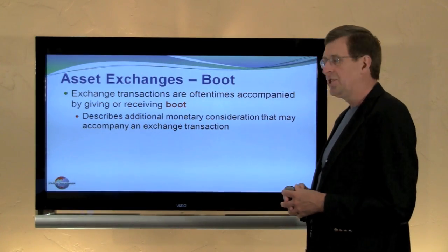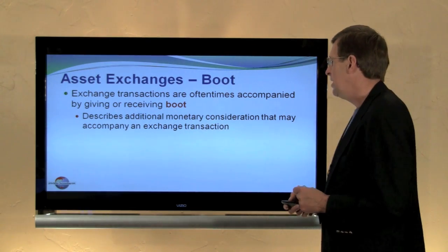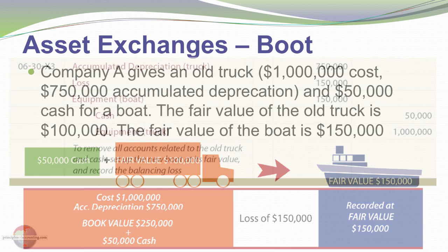Sometimes there's boot involved in an exchange transaction. Boot describes additional monetary consideration — such as cash — that may accompany an exchange. In this example, we keep the same truck with a $250,000 net book value, but we're also throwing in $50,000 of cash. So in total, we're giving up consideration carried on our books at $300,000 for a boat worth $150,000. That gives us a loss of $150,000.